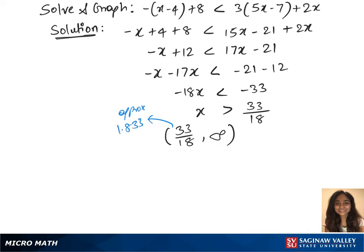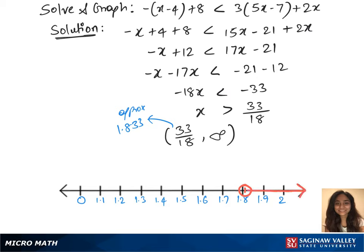So we'll plot in decimals on the graph. You're going to look for 1.833 on the graph and mark it. And that extends to infinity, so mark that and shade the region in between those two points.